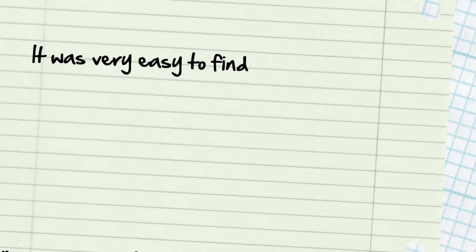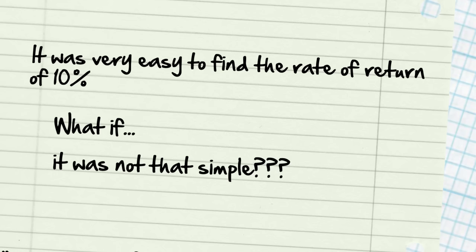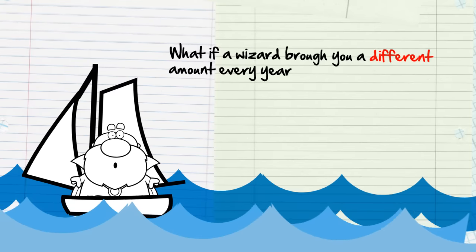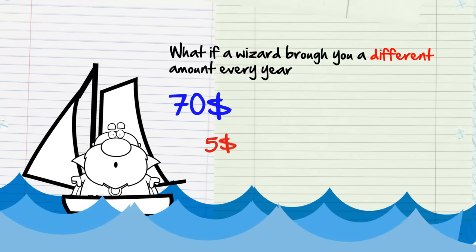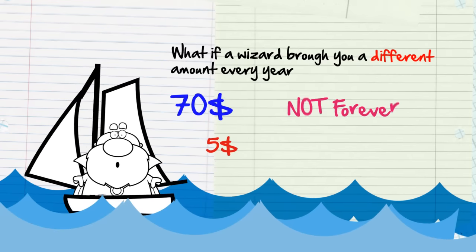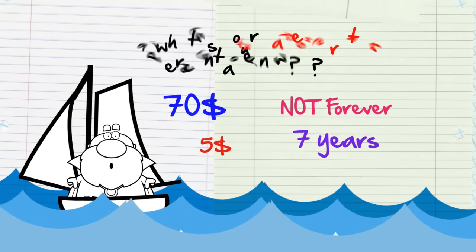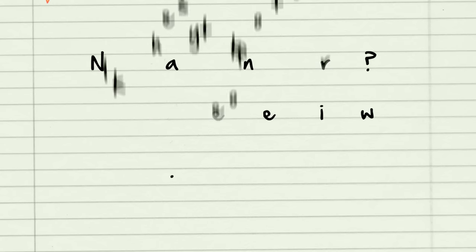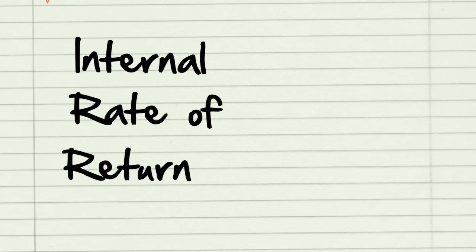It was very easy to find the rate of return of 10%. But what if it wasn't that simple? What if the wizard brought you back a different amount every year? On some lucky years he might bring back $70; on other years, only $5. And what if it was not forever — what if it was for exactly seven years? Not so easy to know your rate of return now, right? It's like the rate of return is now hidden. This hidden rate of return is called the internal rate of return, or simply IRR.